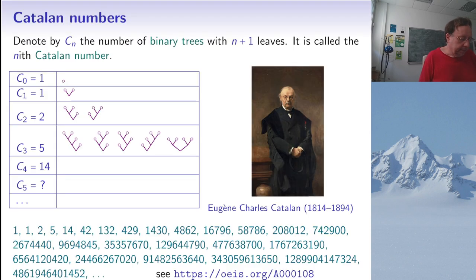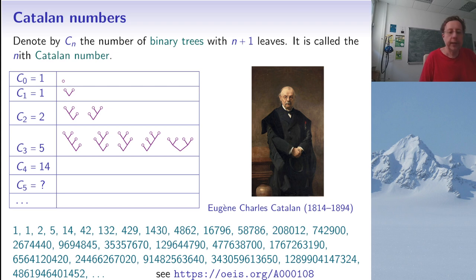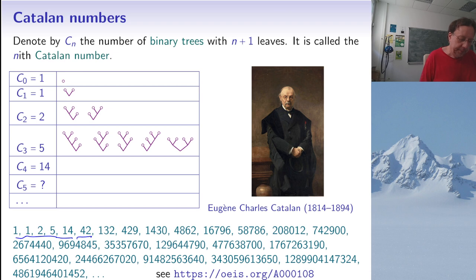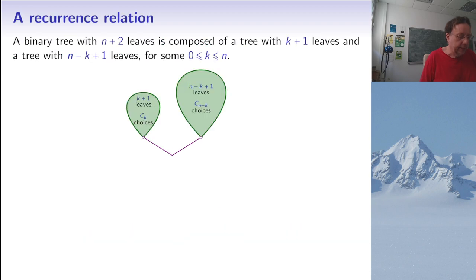So the question is how many binary trees with six leaves are there, and so on. The beginning of the sequence of Catalan numbers found on the OEIS starts with one, one, two, five, fourteen, then forty-two, and the numbers grow quite fast. How do we find further numbers? There are several ways.